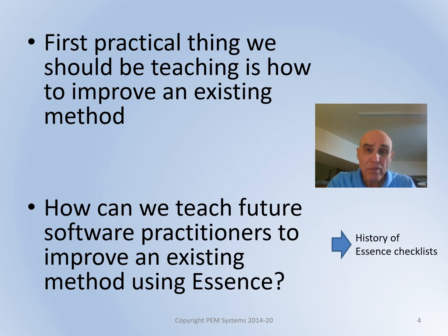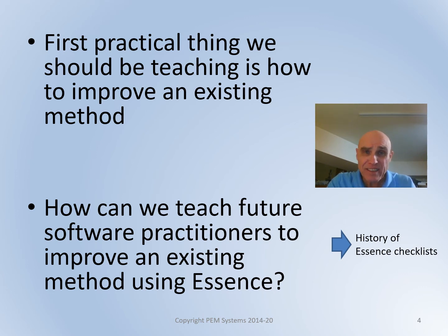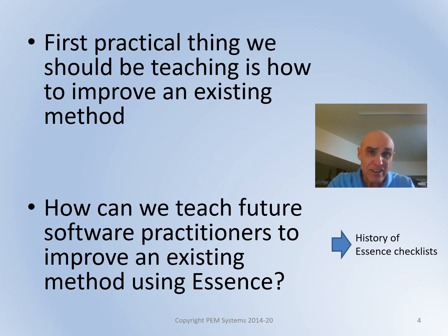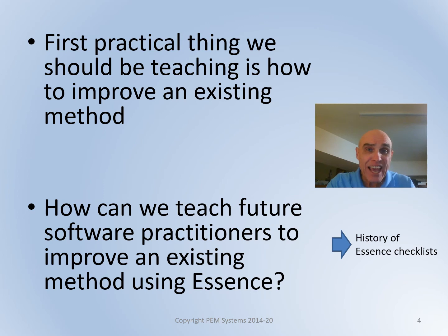The first practical thing I believe we should be teaching our next generation of software professionals is how to improve an existing method. A perfect example of this is the common retrospective practice we often see in agile and agile at scale organizations. What I'd like to do in the remainder of this presentation is focus on how we can help teach our next generation of software professionals how to improve a method using essence. To do this, I want to go back and talk a little bit about the history of the development of the essence checklists, because I believe there's a real opportunity here.